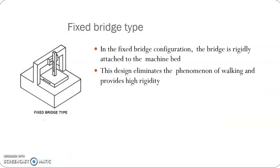The fixed bridge type is designed to eliminate the yawing problem in moving bridge type and it provides high rigidity by moving the table. The movement of the bridge is now transferred to movement of the table, so that is the X axis, and the other movements are the same as the previous type.